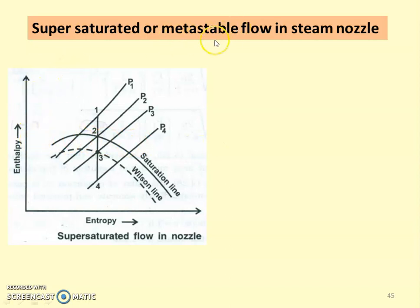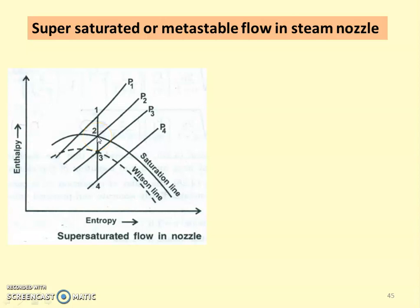Supersaturated or metastable flow in the steam nozzle is the topic for this lecture. We take the enthalpy entropy diagram for the expansion in the steam nozzle. The inlet pressure is P1 and the steam expands isentropically. There are four pressure lines: P1, P2, P3, and P4. P2 is passing through the saturation point, so state number two is the saturated condition.